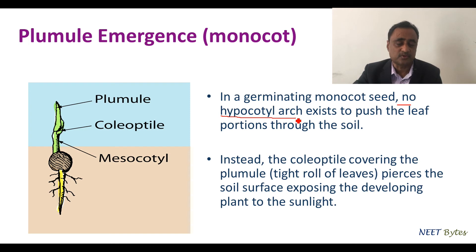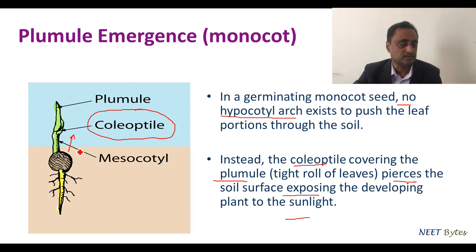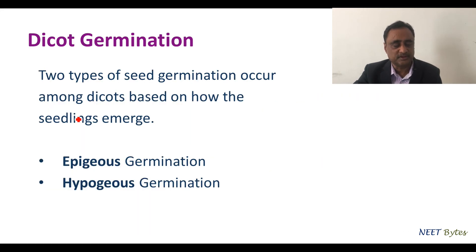In the case of monocot, there is no hypocotyl arc to push the leaf portion through the soil. Instead, the coleoptile covering the plumule pierces the soil surface, exposing the developing plant to sunlight. The coleoptile then develops into the plumule.